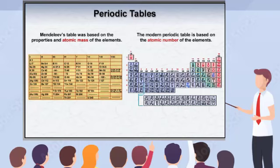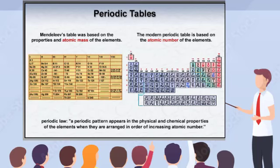The periodic table should be arranged according to atomic number. The discovery of atomic number and its benefit in organizing elements led to the modern periodic table and what is known as the periodic law, which states: a periodic pattern appears in the physical and chemical properties of the elements when they are arranged in order of increasing atomic number.